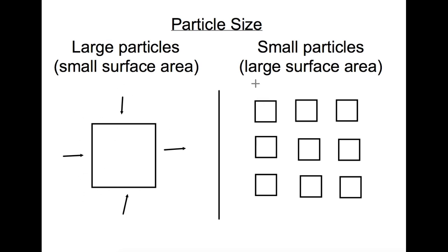When we make the particles smaller we end up with a larger surface area as there are more places where collisions can occur. By making the particle size smaller, the frequency of collisions increases and thus the rate of reaction increases too.